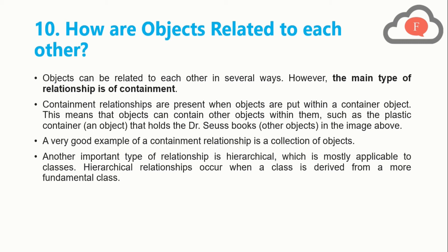Another important type of relationship is Hierarchical, which is mostly applicable to classes. Hierarchical relationships occur when a class is derived from a more fundamental class. In the case of objects, the type of relationship is called a containment relationship.